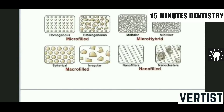That is known as spherical particles and irregular particles. When you consider the microfill composite, they have two sub-types: homogeneous and heterogeneous. In homogeneous, the filler content means all the particles are spherical of the same size and diameter. In heterogeneous, you have a mix — that is your irregular particles and your spherical particles.